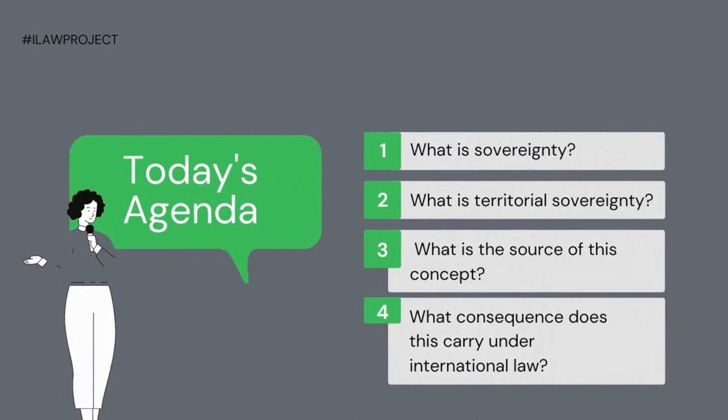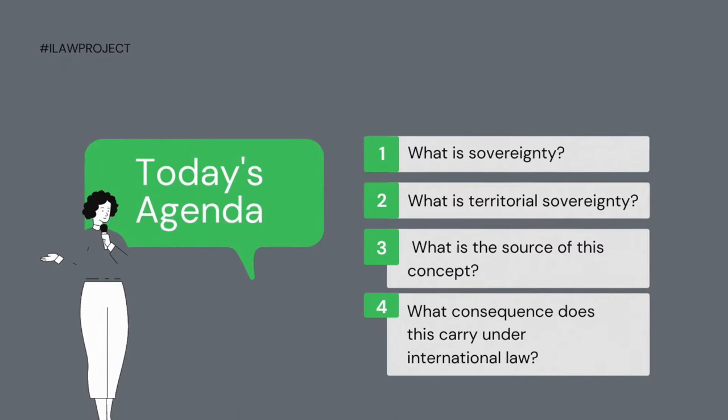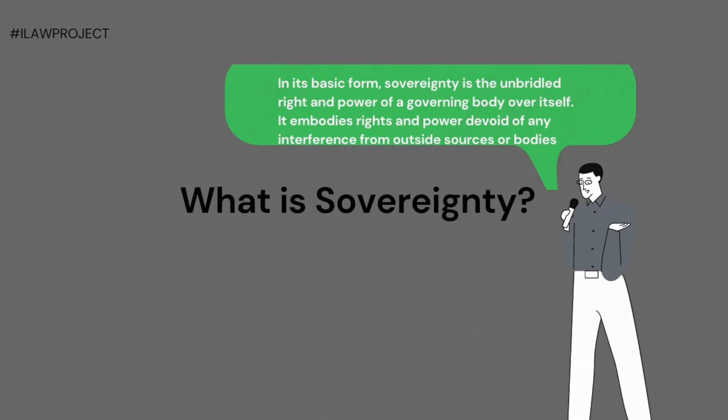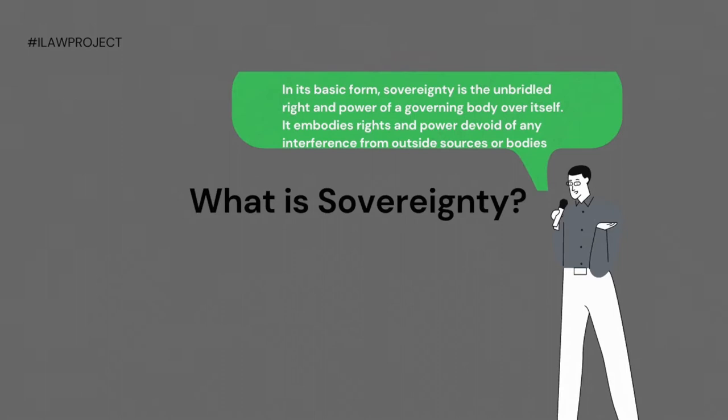To the question: what is sovereignty? In its basic form, sovereignty is the unbridled right and power of a governing body over itself. It embodies rights and powers devoid of any interference from outside sources or bodies. It is a state of supreme authority.